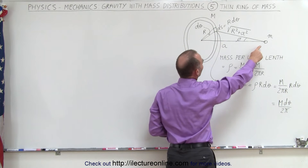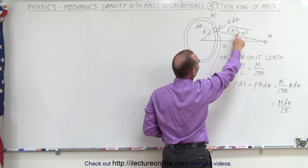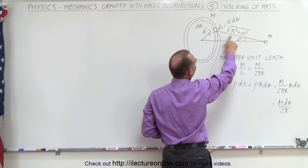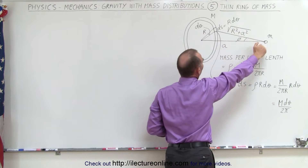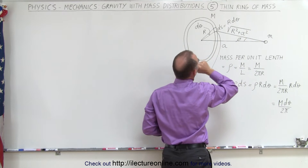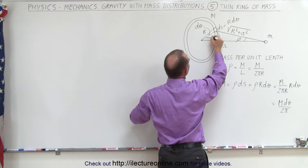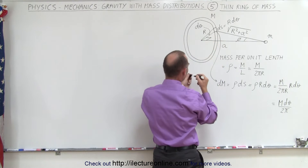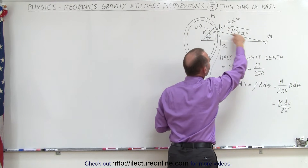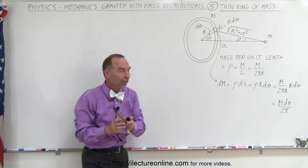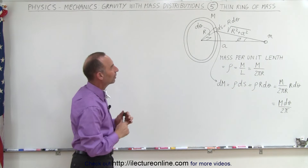The distance from m to that little piece on the ring is the square root of r squared plus a squared, because it's the hypotenuse of a right triangle. This is a 90 degree angle, so you can see that this will be the hypotenuse of the right angle triangle, giving us the distance between m and a small segment on that circle.